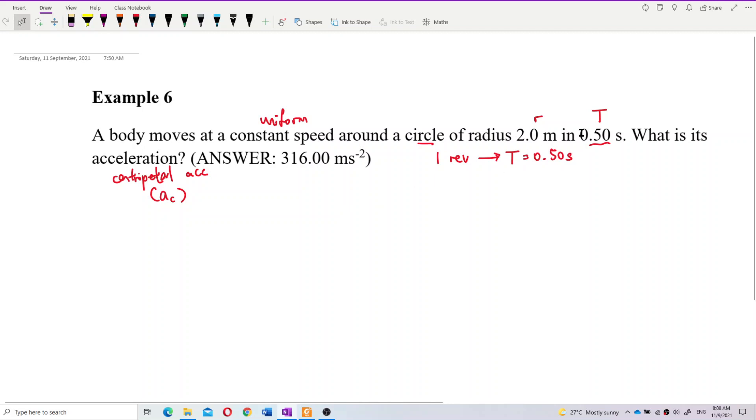So we have the R and T. How to find AC? Let's look at the AC formula. Here, centripetal acceleration formula, we have V squared over R. We also have R omega squared or V omega.